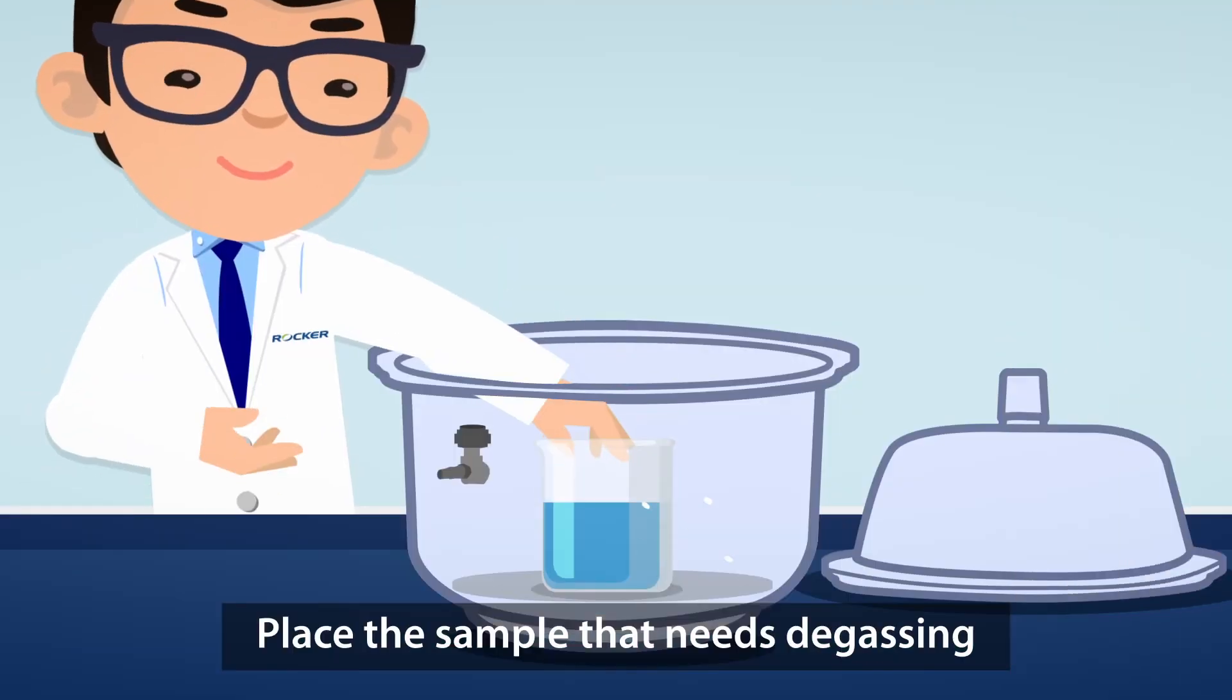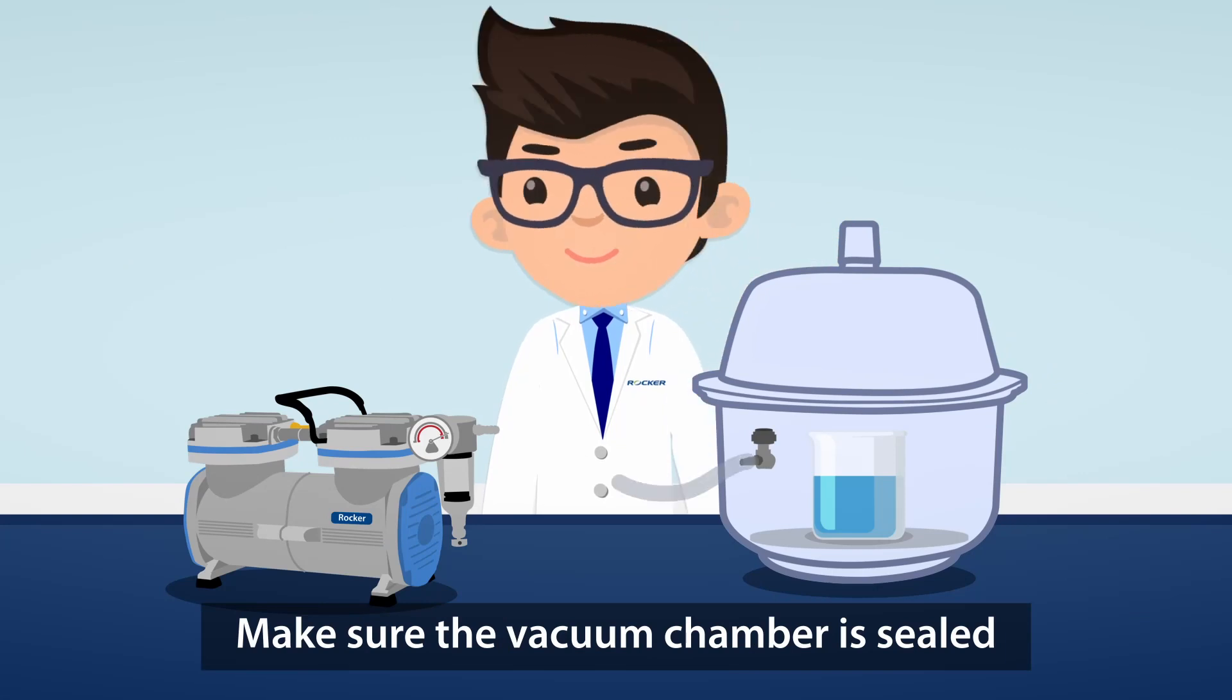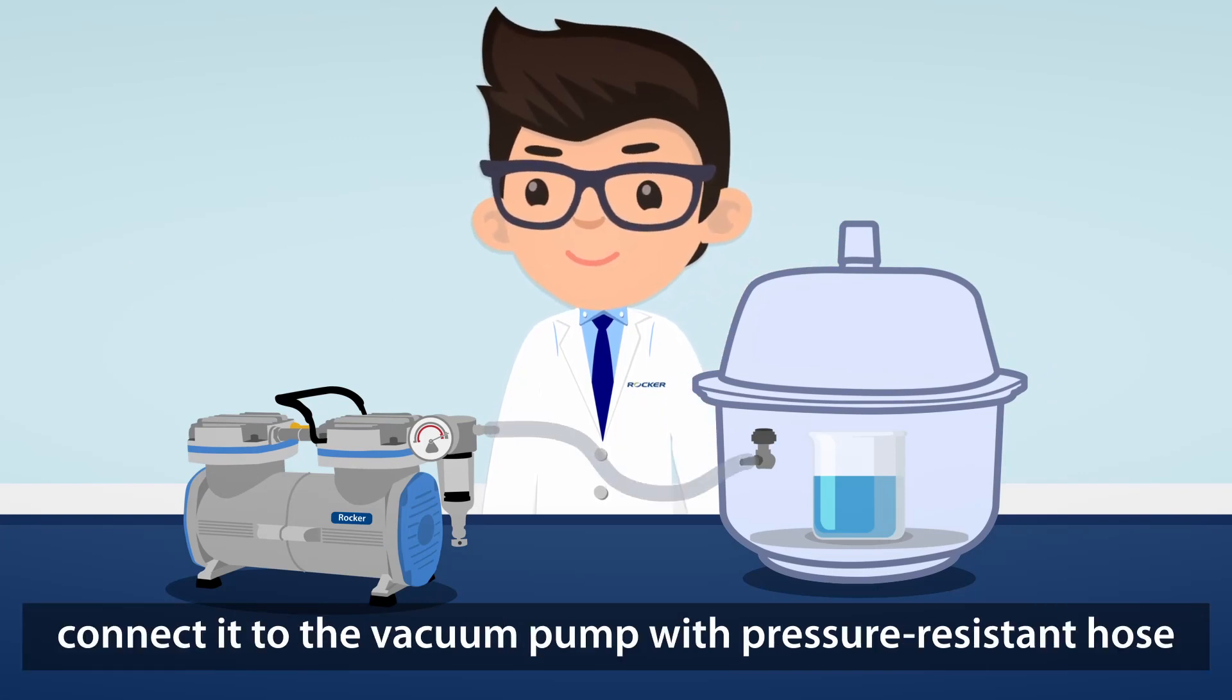Place the sample that needs degassing inside the vacuum chamber. Make sure the vacuum chamber is sealed, connected to the vacuum pump with pressure-resistant hose.